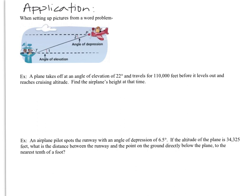We'll do quite a bit of application in this lesson: reading a word problem, creating a right triangle, and deciding where our given information goes. Key concepts are angle of elevation and angle of depression. An air traffic controller looking up toward the pilot is elevating their angle — that's the angle of elevation. If the pilot looks down toward the tower, the angle is depressing — that's the angle of depression. We'll stay in degree mode for all of these and watch our rounding rules.